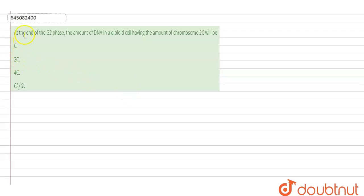Hello students, the question here says that at the end of the G2 phase, the amount of DNA in a diploid cell having the total amount of chromosome 2C will be how much?